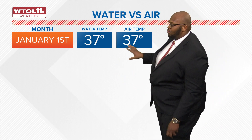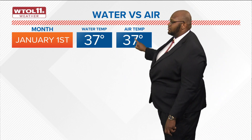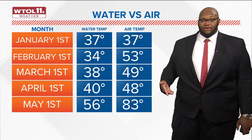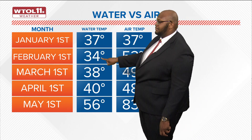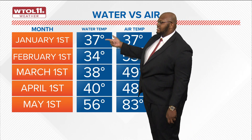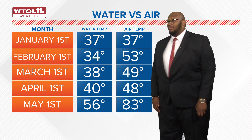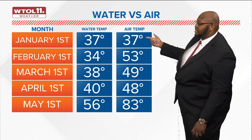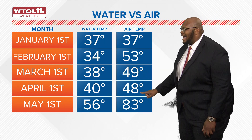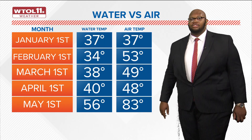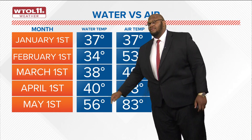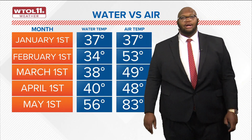We can break this down month by month as well. On January 1st, air temperature was 37 degrees and water temperature was also 37 degrees. By February 1st, air was 57 degrees while water was cooler, ranging between 34 and 37 degrees. In March, air was 38 degrees and water was 49 degrees, with some change showing. By May 1st, air ranged from 48 to 83 degrees, while water showed a more gradual rise from 38 to 56 degrees.